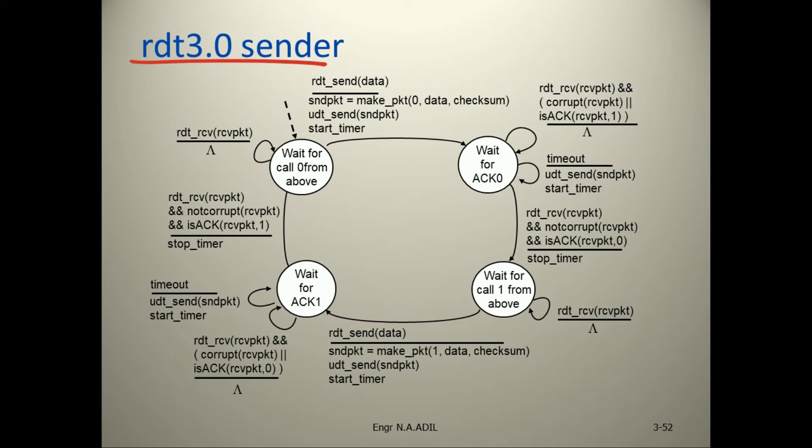If the receiver sends back packet 0 instead of packet 1, timeout occurs again and the sender retransmits the packet and restarts the timer. When RDT receives the packet uncorrupted and acknowledges received packet 1, the sender stops the timer. If RDT receives a duplicate packet, it does nothing.